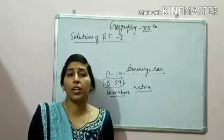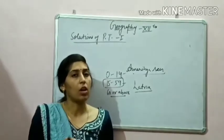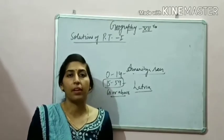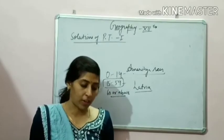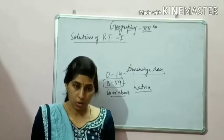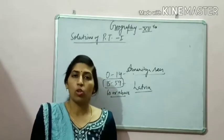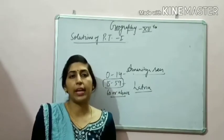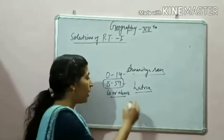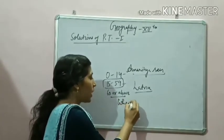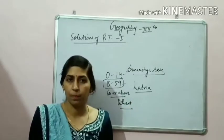The next question asks which crop is not a plantation crop. You were given four crop names: coffee, sugarcane, wheat, and rubber. Rubber, sugarcane, and coffee are plantation crops, whereas wheat is a food grain. So the correct option is wheat — it is not a plantation crop.